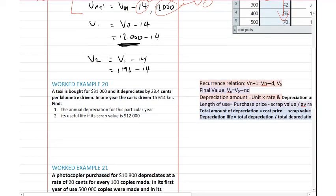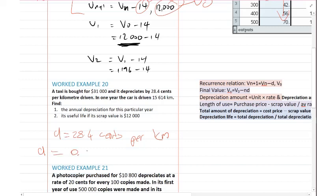Next question, question 20: a taxi is bought for $31,000 and it depreciates by 28.4 cents per kilometre driven. In one year the car is driven 15,614 kilometres. Find the annual depreciation for that particular year. The depreciation rate D is given as 28.4 cents per kilometre, which in dollars becomes D equals $0.284.